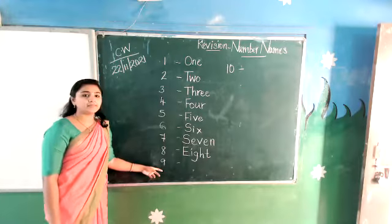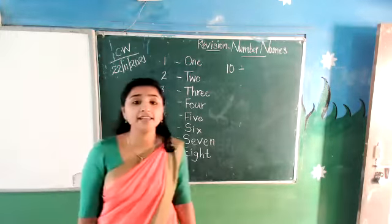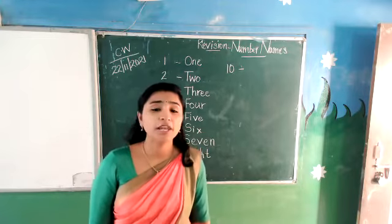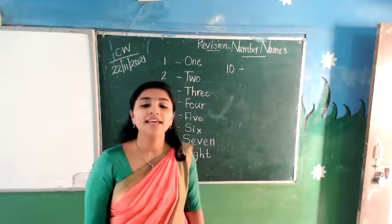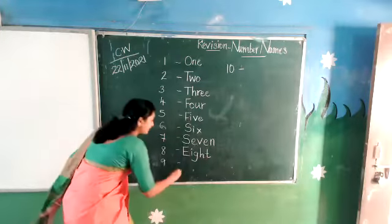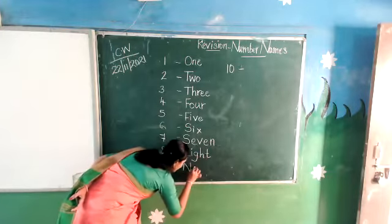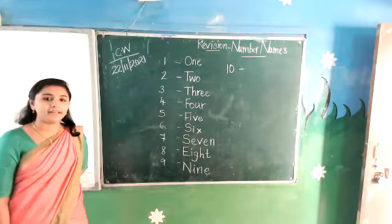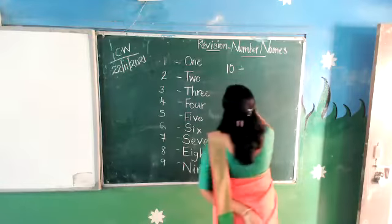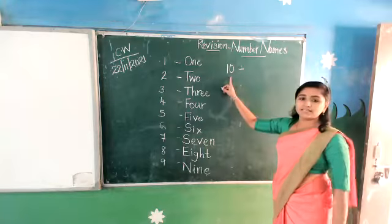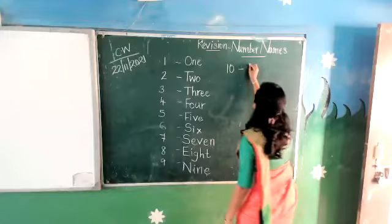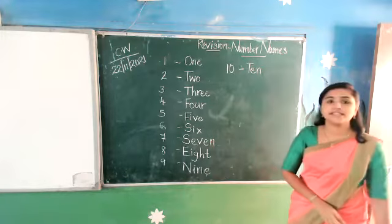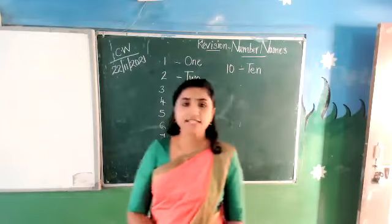What is the spelling of 9? N-I-N-E — 9. All of you sing with me: N-I-N-E — 9. And at last, the last number is 10. T-E-N — 10.